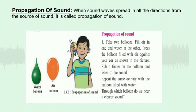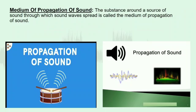Stand at one end of a big table and ask a friend to stand at the other end. Ask the friend to knock lightly on the table. What will you hear? The substance around the source of sound through which sound waves spread is called the medium of propagation of sound. Transmission of sound occurs at different speeds through different media. It is faster through a liquid than through a gas, and faster through a solid than through a liquid.